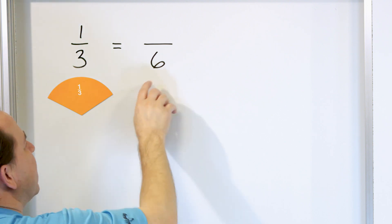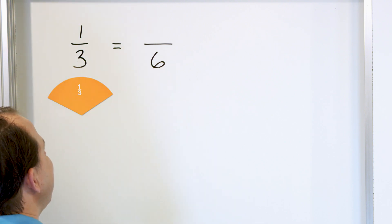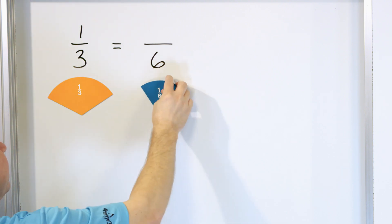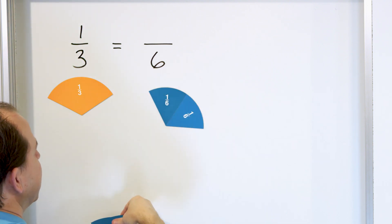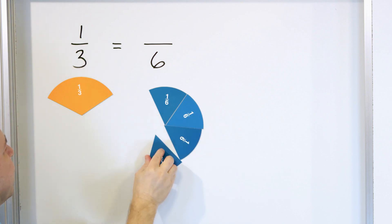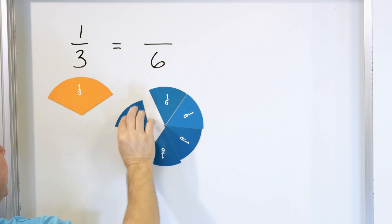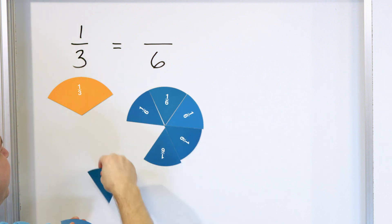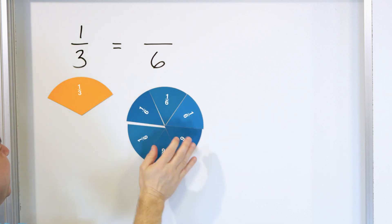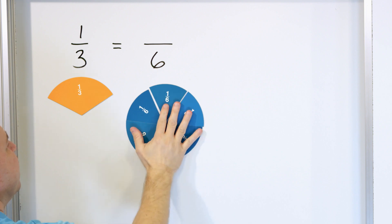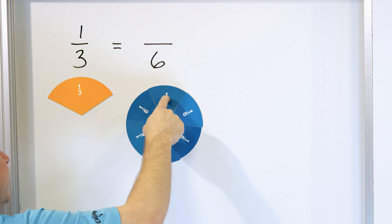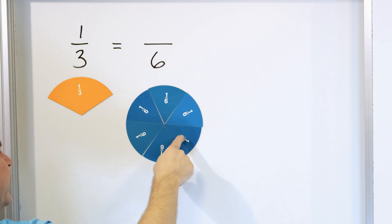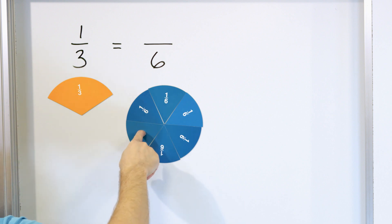Well, if it has a 6 on the bottom, that means the pizza is divided into 6. Because if you think about this, this is a circle divided into 6 pieces. That's what a 6th is — you divide a circle into 6 equal slices: 1/6, 2/6, 3/6, 4/6, 5/6, 6/6.